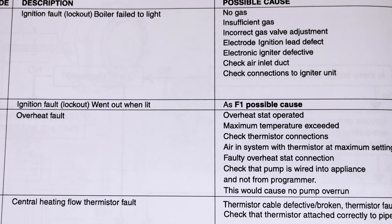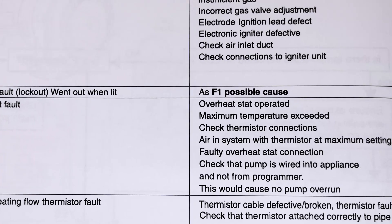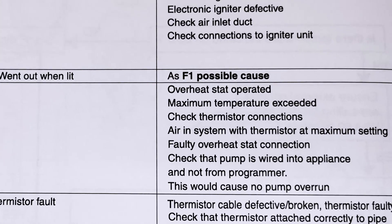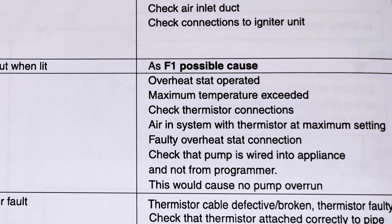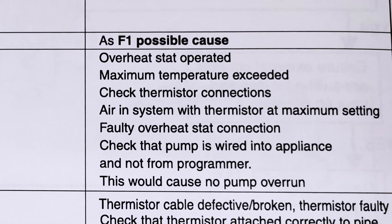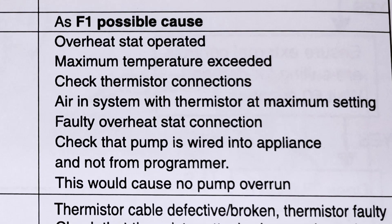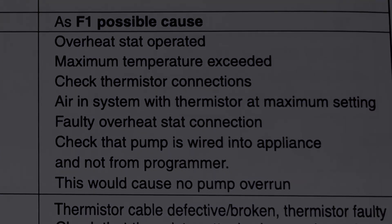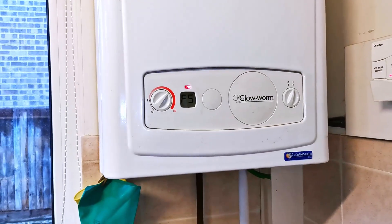Looking in the manual, the F5 is confirmed as an overheat fault. The possible causes listed are: overheat stat operated, maximum temperature exceeded, check thermistor connections, air in system with thermistor at maximum setting, faulty overheat stat connection, and check that the pump is wired into the appliance and not from the programmer — because that would cause no pump overrun. These are only guides pointing you in the direction of the fault.